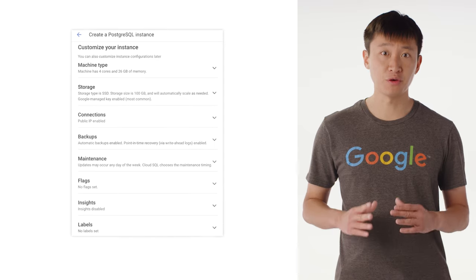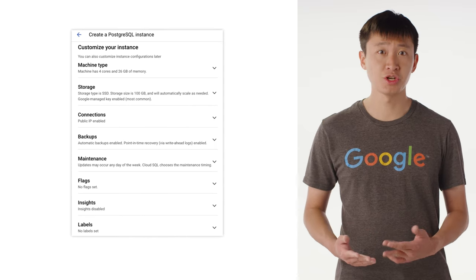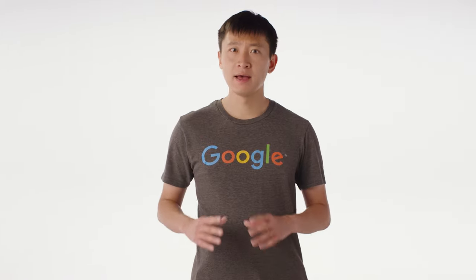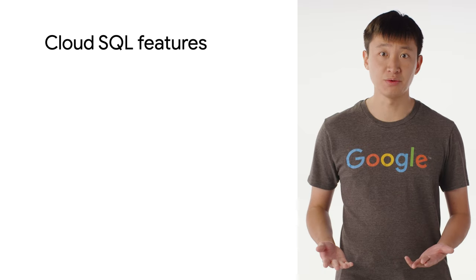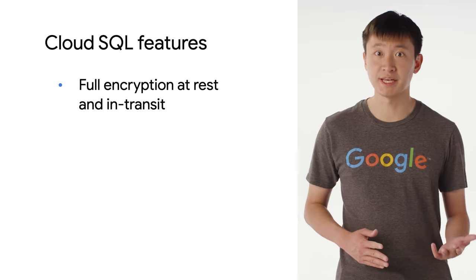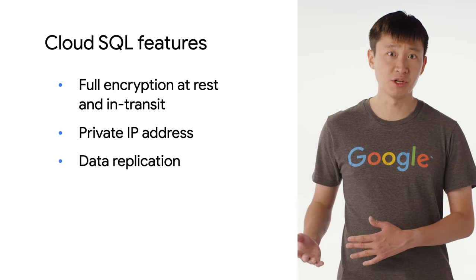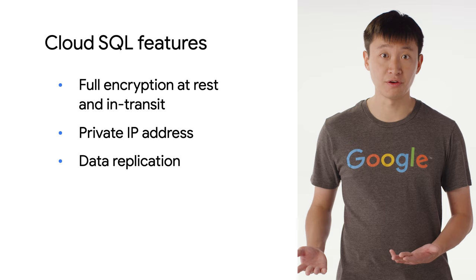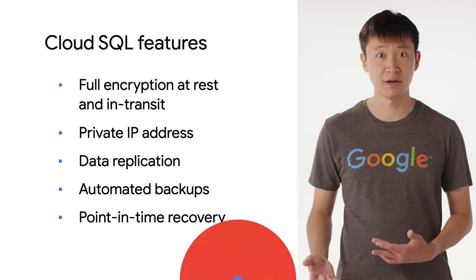If you like, you can further customize your instance's machine type, storage, backups, and more. After that, you'll be ready to upload your data or connect your applications. Several important features of Cloud SQL include full encryption at rest and in transit, a private IP address, data replication between multiple zones with automatic failover, automated backups, and point-in-time recovery.